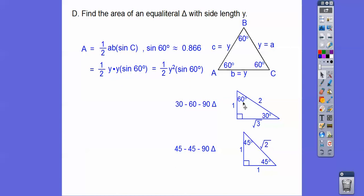So the sine of 60 is going to be opposite over hypotenuse, root 3 over 2. So let's substitute that in there, root 3 over 2. And then, so we get, there's our equilateral triangle formula for the side length of Y.